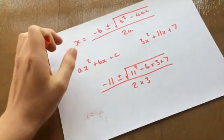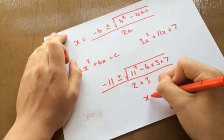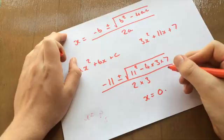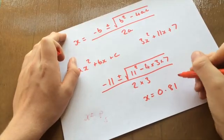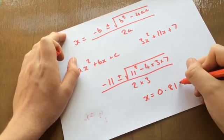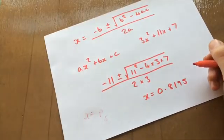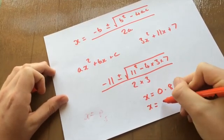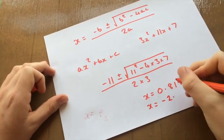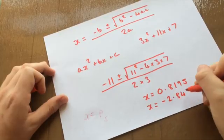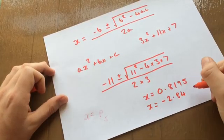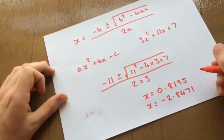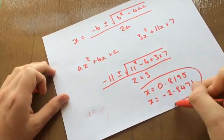Now we've put this in our calculator. We get x is equal to 0.8195 to 4 decimal places. Or, when we go the opposite and we stick the minus in, we get x is equal to minus 2.8471. And those are your two solutions when doing it in this way.